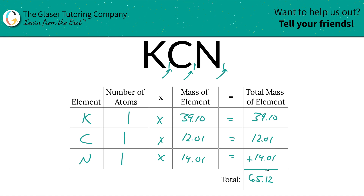You're probably thinking, why am I even doing this? Since we're solving for molar mass, the units here are grams per mole. And that's all there is to it. Now you know how to find the molar mass of potassium cyanide. Take care.